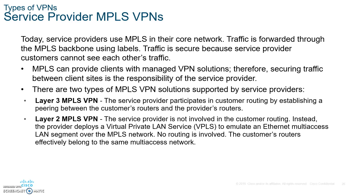Service provider VPNs are mainly MPLS-based, offering two types. Layer 3 MPLS VPN: the service provider participates in customer routing by establishing a peering between customer routers and the provider's routers. Layer 2 MPLS VPN: the service provider is not involved in routing; instead the customer deploys a virtual private LAN service to emulate an Ethernet multi-access LAN segment over MPLS. No routing is involved — it's almost like a direct connection, with customer routers effectively belonging to the same multi-access network.